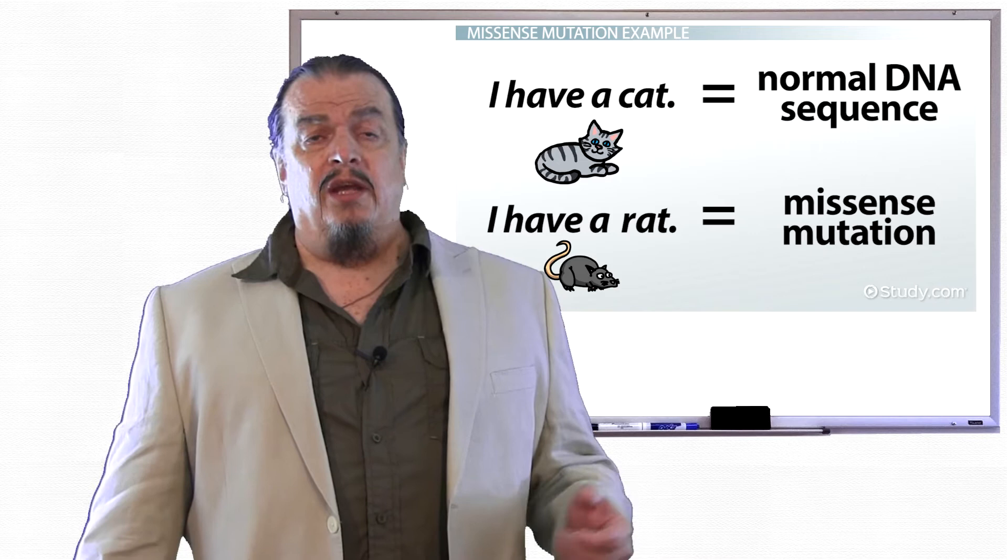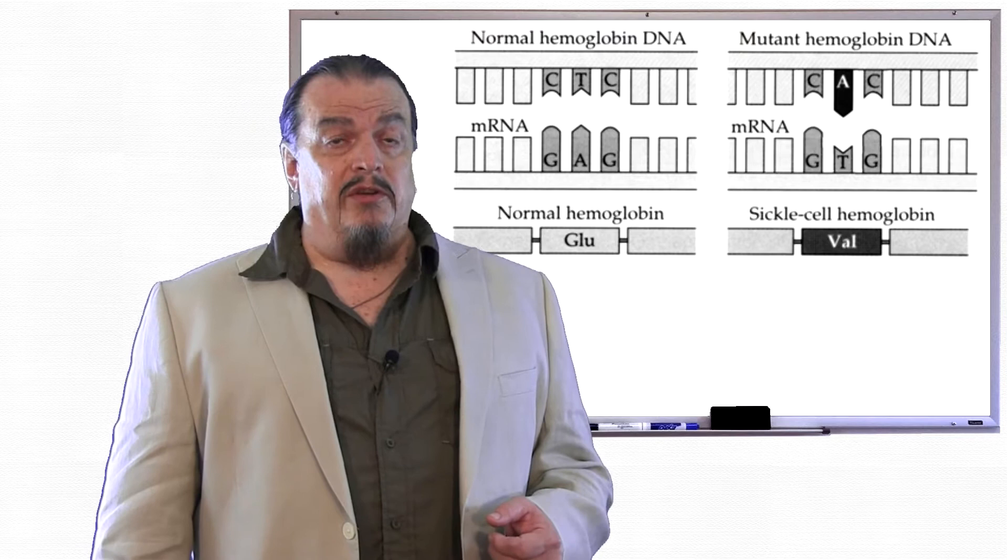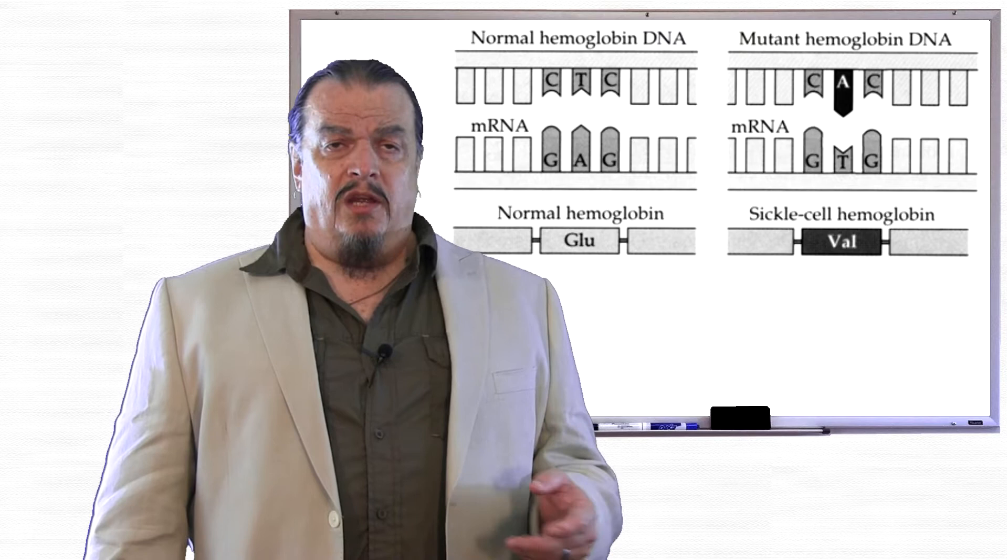Let's have a look at an example of real-world missense mutation. Sickle cell anemia is a disease caused by a missense mutation in hemoglobin DNA. A healthy DNA codon sequence in just one base pair causes the problem.